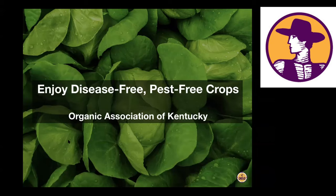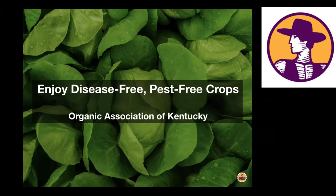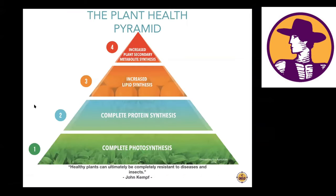We live in a world where economics drives behavior — you achieve what you incentivize. Unfortunately, the economic incentives have not been aligned for most stakeholders in the agricultural space to have a motivation to share this information. Over the course of the next 30 to 40 minutes, I'm going to give you a very high-level overview of our perspective on disease and insect resistance and how we think about plant health. I'll frame the conversation around a diagram we've developed called the Plant Health Pyramid.